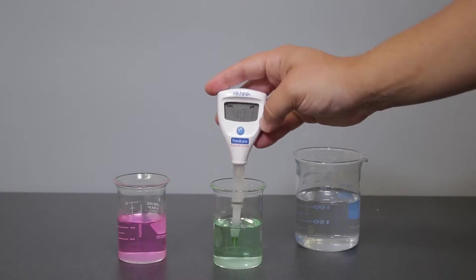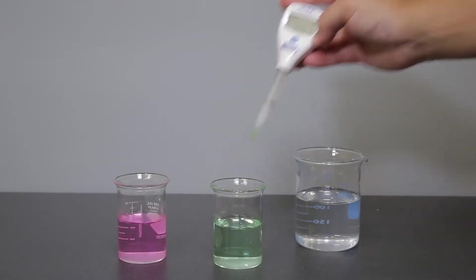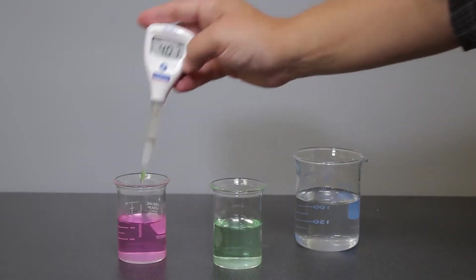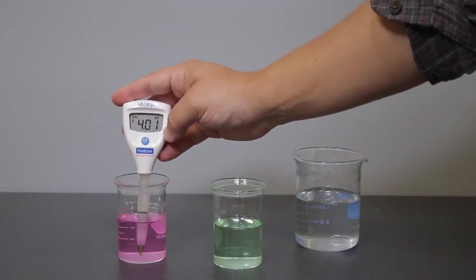Once stable, the tester will automatically store the calibration and prompt you to use pH 4.01 buffer. Rinse the electrode again and place the tester in your pH 4.01 buffer.